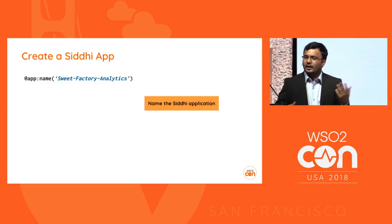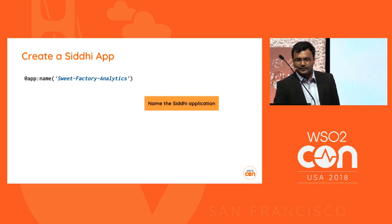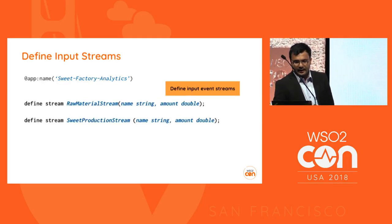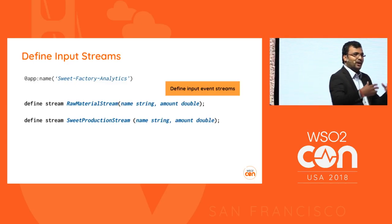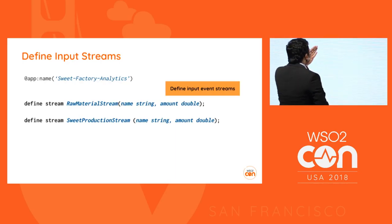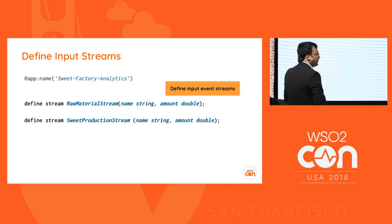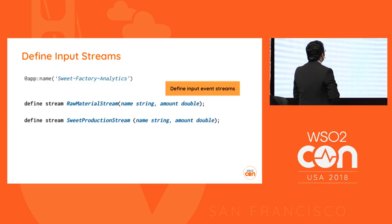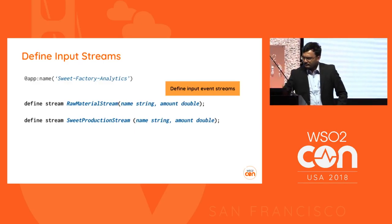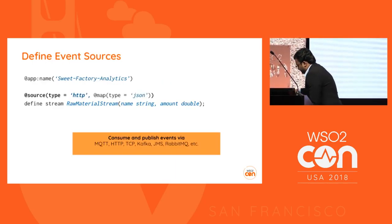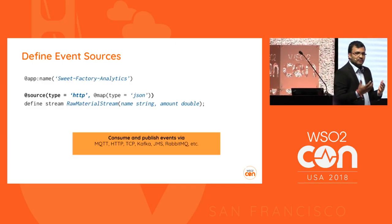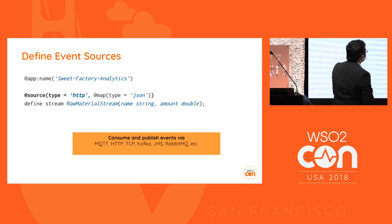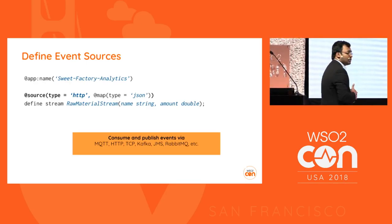To start, you write a name for the app. For this use case, we're using 'Sweet Factory Analytics.' Second, you define the input stream - where you're going to receive events. In this use case we have two input streams: the raw material stream and the suite production stream. The raw material stream is the input stream for this Siddhi app, and we receive events for it using an HTTP source, meaning we receive through HTTP protocol, with JSON as the data type.